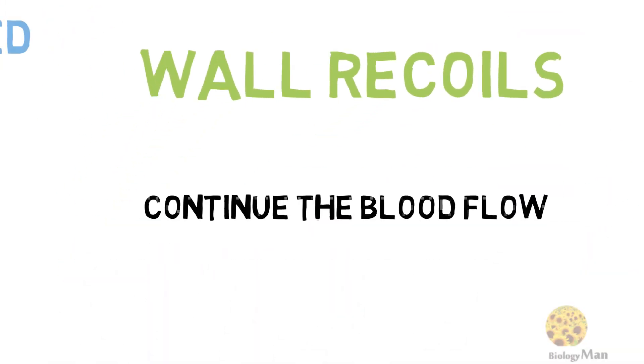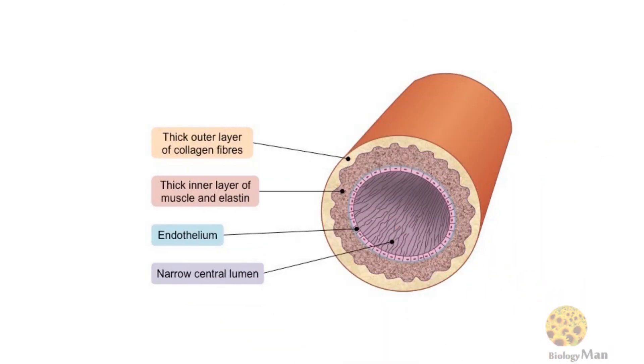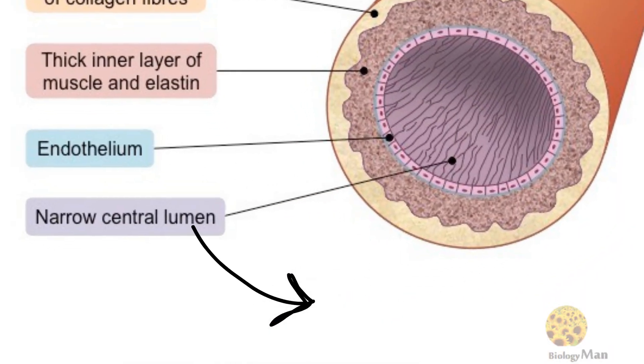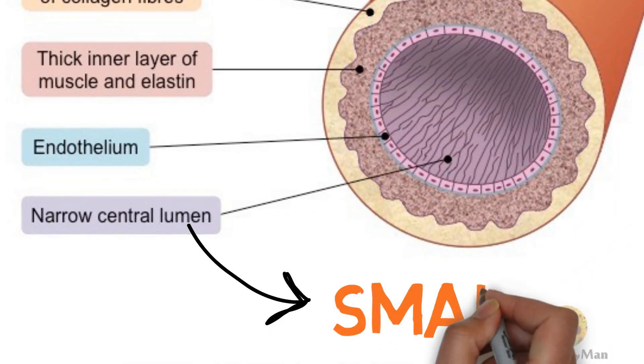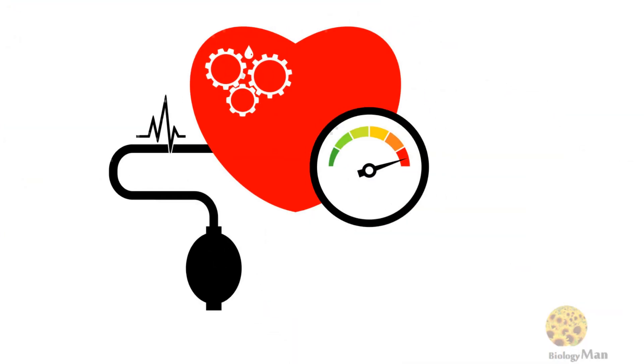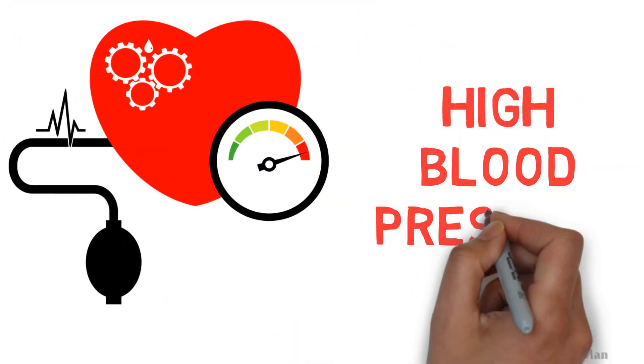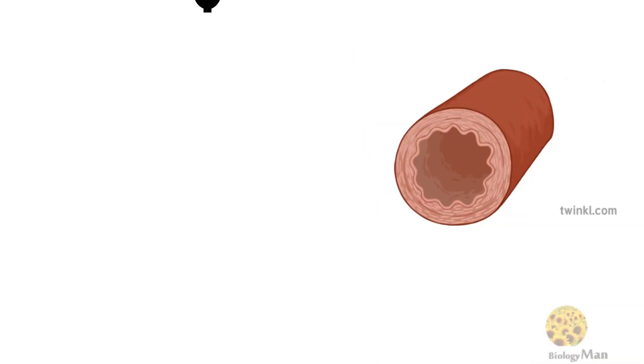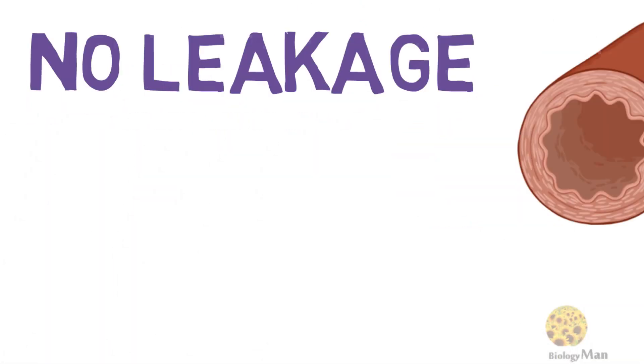The lumen of an artery is small, at least smaller than a vein. This helps maintain blood pressure at a high level. As a good tunnel for transport, no leakage should occur. Arteries are formed by thick layers of muscle and elastic fibers, so no substances can enter or leave the artery.